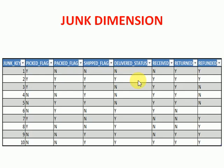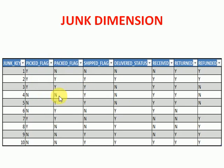What you can do is delete all the flag-related columns from that dimension and create another dimension. That dimension you can name as Junk Dimension, and you will be creating one primary key here. All flags will be stored in this table — Y or N, and whatever you have: packed, shipped, delivered, received, returned — whatever different status flags you have in your table. You can delete all those columns from that dimension and instead maintain this primary key into that dimension table.